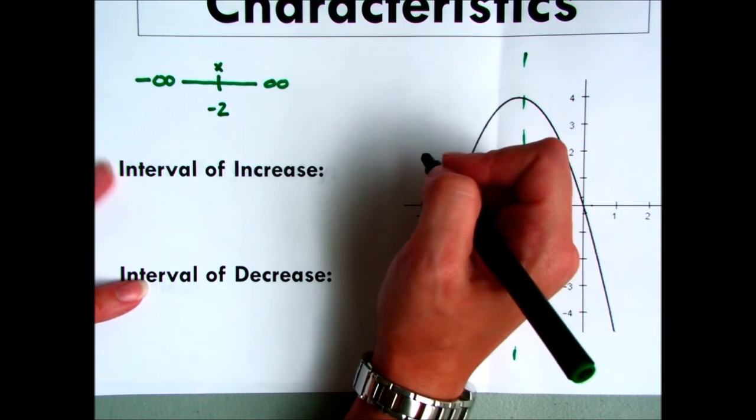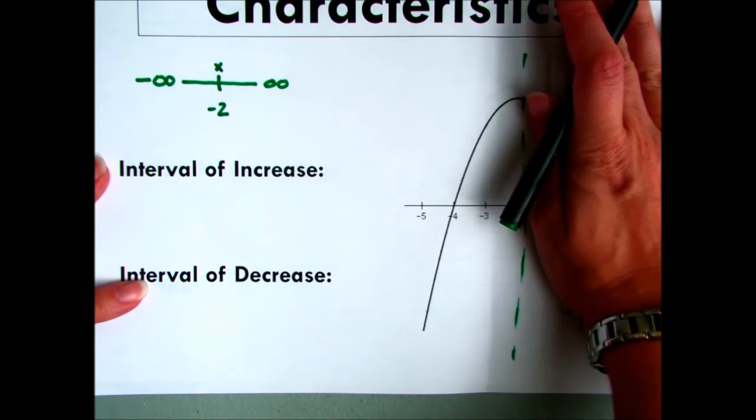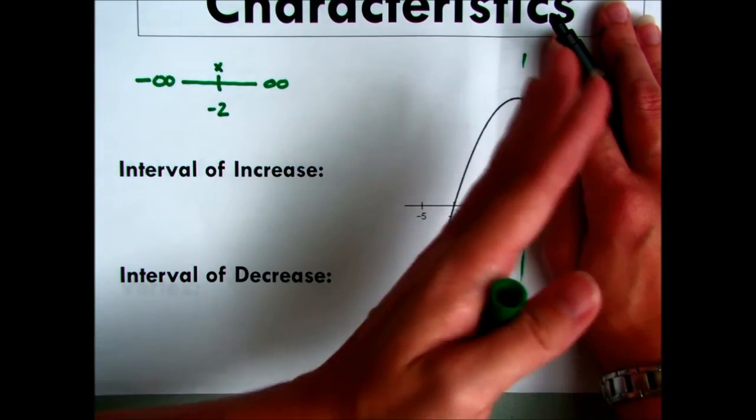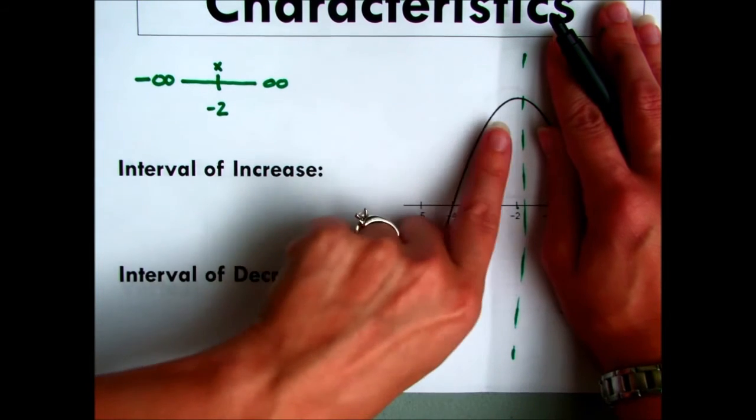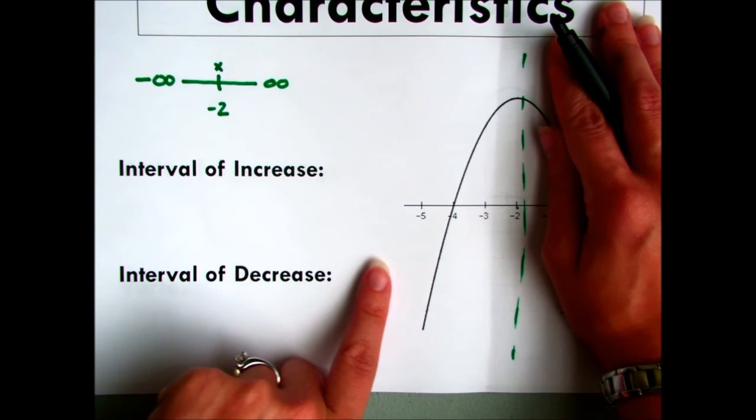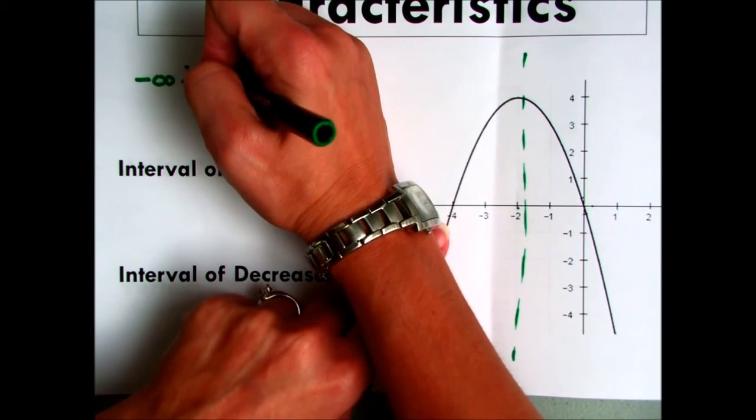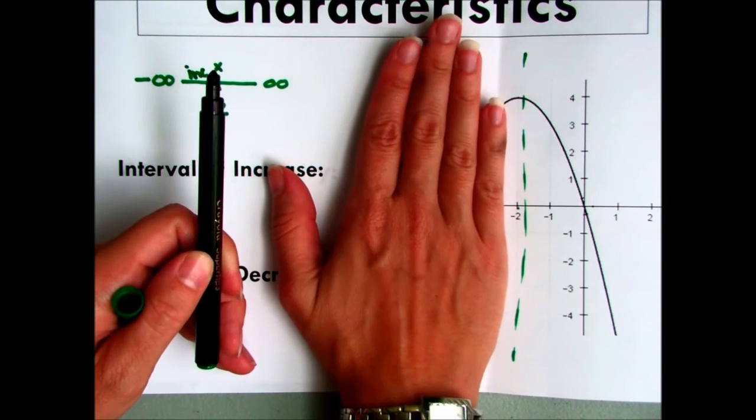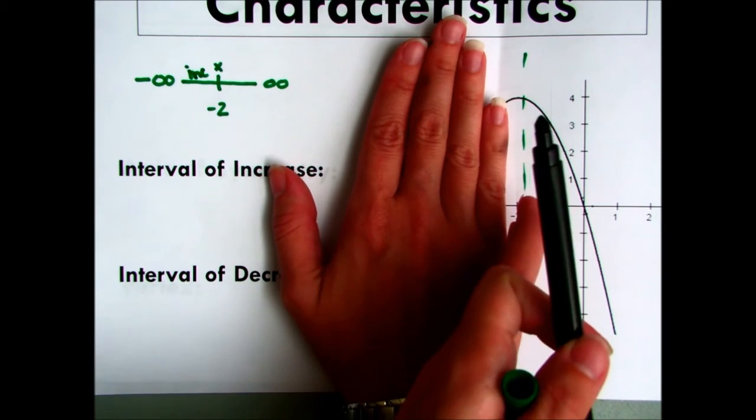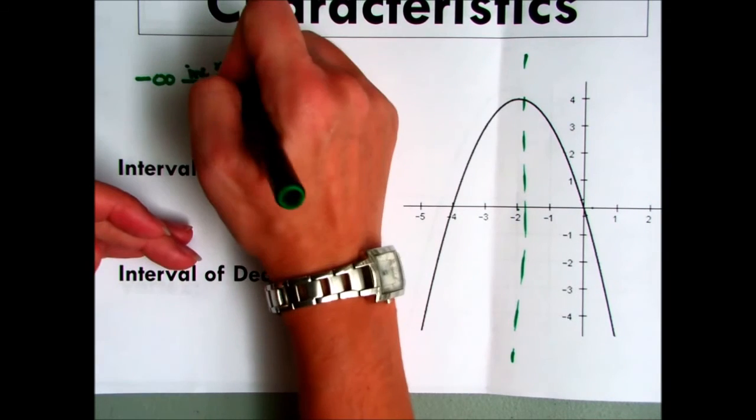So our interval of increase, we're going to try to figure out what part of this graph is increasing. So if you cover up half of it, meaning you don't look at the side that has, you just look at one side of the axis of symmetry. So if we're looking at the left side, read this like it's a book from left to right. Look at the graph. From left to right, it's going up, which means that it's increasing on the left side. And if you cover this up here, and you look at it from the other direction, on the right side of the graph, if you read this like it's a book from left to right, notice that this graph is going down, which means it's decreasing on the other side.